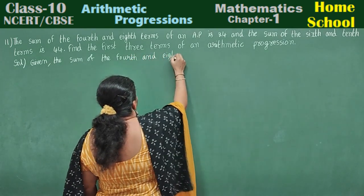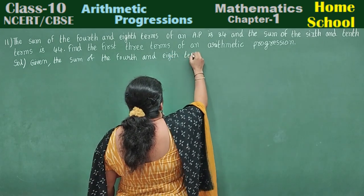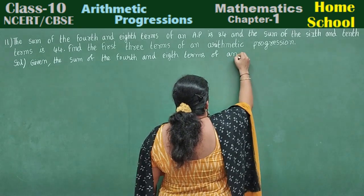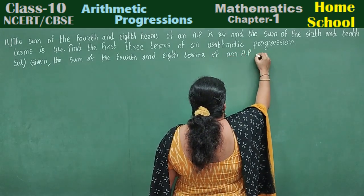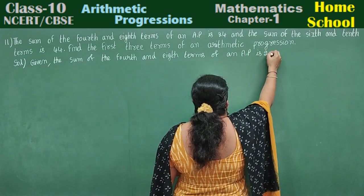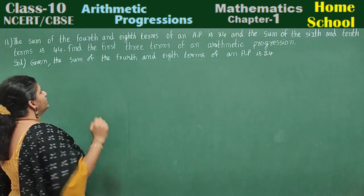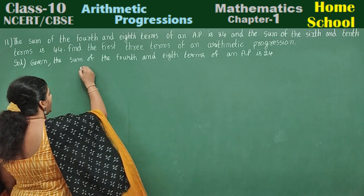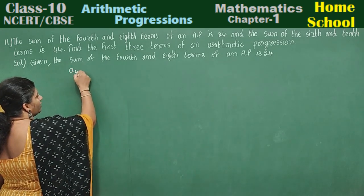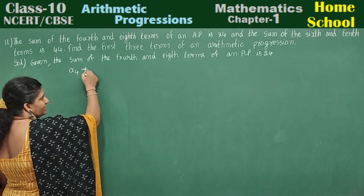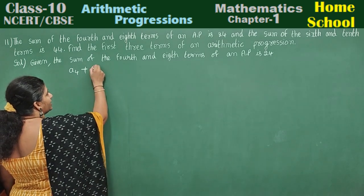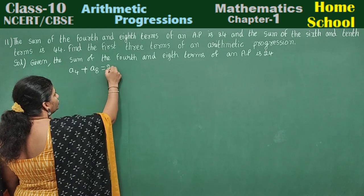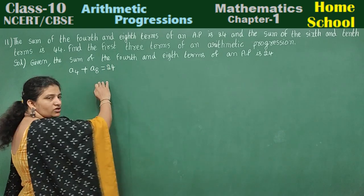Given the sum of the fourth and eighth terms of an arithmetic progression is 24. Fourth term sum of the fourth and eighth terms: A4 plus A8 is equal to 24.